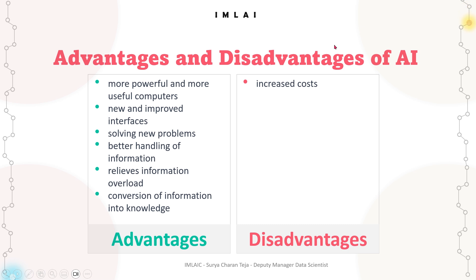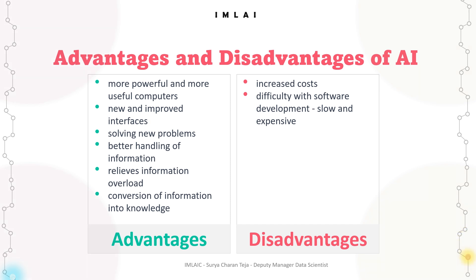Additionally, hiring skilled AI professionals can be costly. The second disadvantage is difficulty with software development — it's slow and expensive. Developing software can be a slow and expensive process, particularly for complex applications, because AI algorithms often require a large amount of carefully labeled and curated data to be trained. AI software must also be continually updated and refined to adapt to changing circumstances and improve performance.